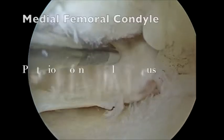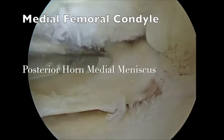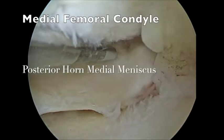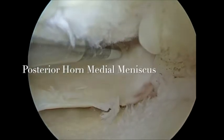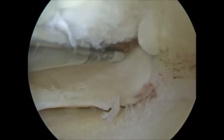The first part. Moving from the anterolateral portal, the probe was used to identify the torn medial meniscal root from the anteromedial portal.